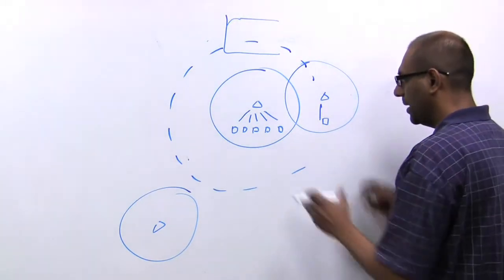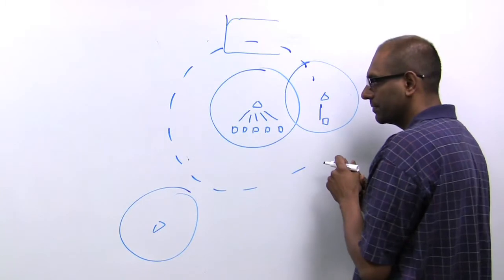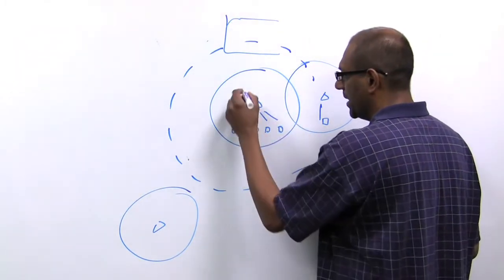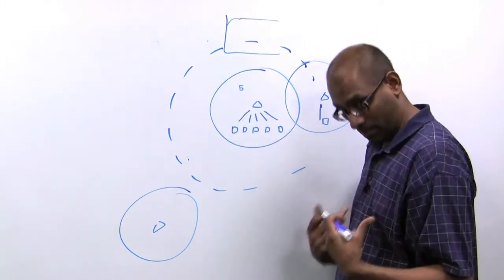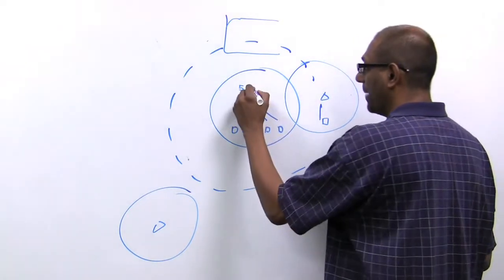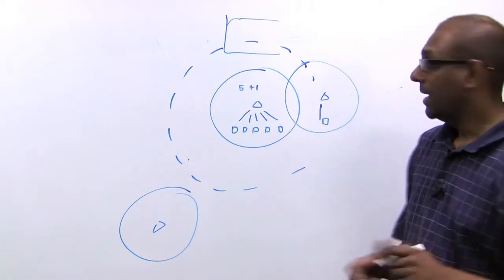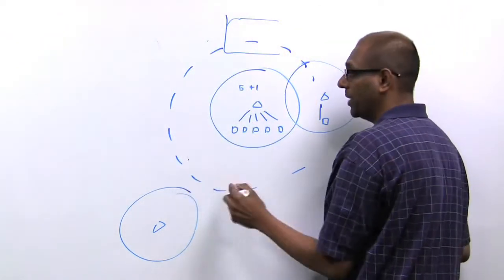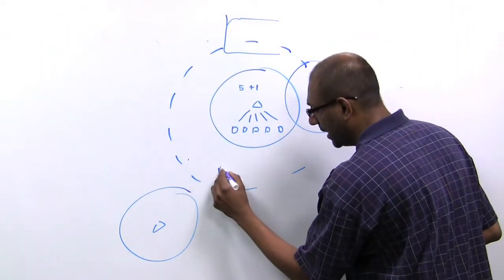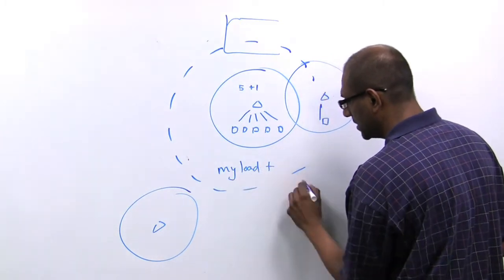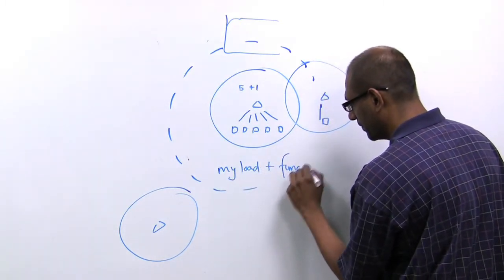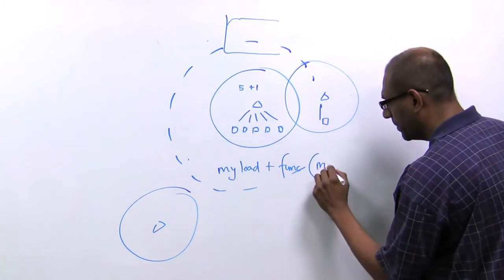So for example, in this particular instance, the access point would say, I have five devices in my own cell and I happen to see one device in my neighbor. So if you have multiple neighbors, what you end up doing is you look at my load plus some function of all my neighbor's load.